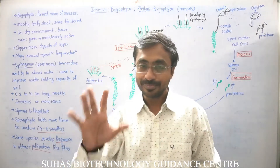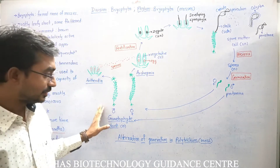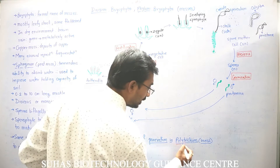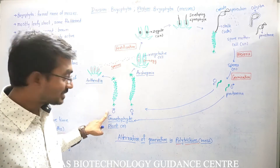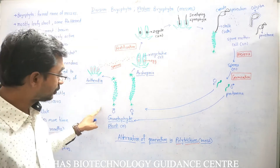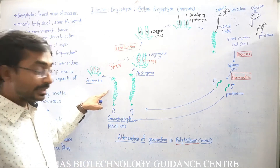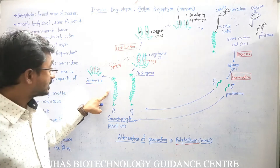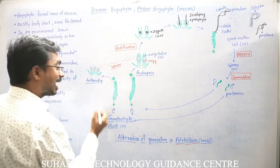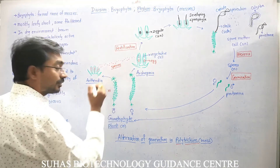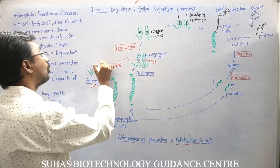Now let's look at the alternation of generations in Polytrichum, a common moss. There are separate male and female gametophyte plants — gametophytes are haploid. On the top of the male gametophyte plant, antheridia develop. The whole plant is haploid, and the antheridia are also haploid, so they develop sperms by mitosis.